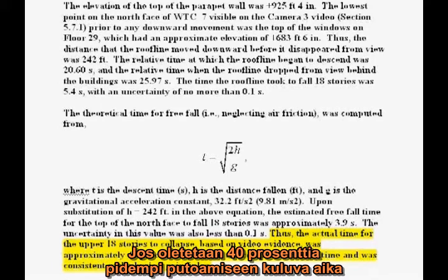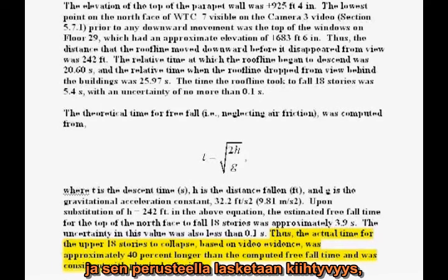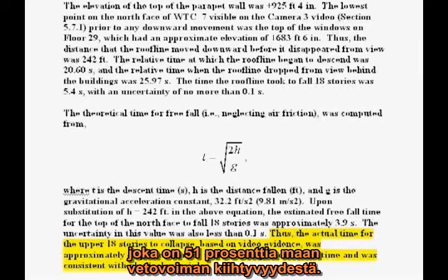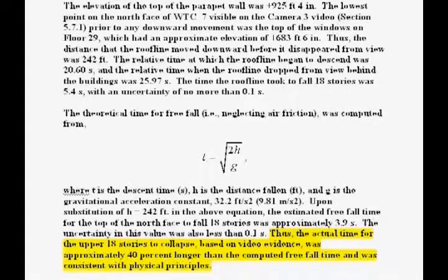If you start with a 40% increase in the time of fall and work backwards to compute the effective acceleration, their claim is equivalent to saying the acceleration of the building is only 5 meters per second squared, which is 51% the acceleration of gravity.